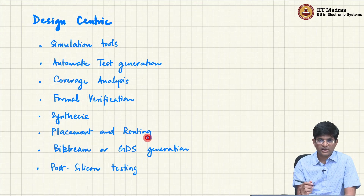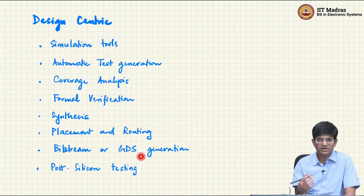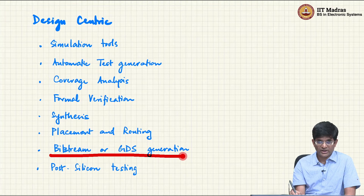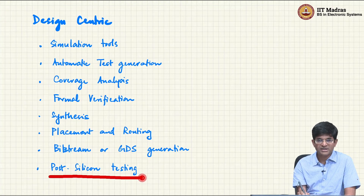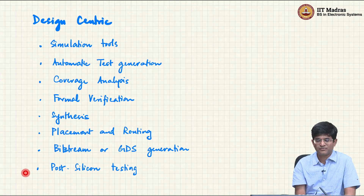Once you have done this placement and routing, you are almost done with your design. What needs to be done is to generate either the bitstream for an FPGA or the so-called GDS2 — Graphical Design System 2 — which is a standard format used for exchanging information about the actual design sent to the foundry. At this point you are basically done with your design, but you still need to get back the chips and do some kind of post-silicon validation and testing to confirm the chips behave as expected. There are a whole bunch of tools that help through this entire design cycle.